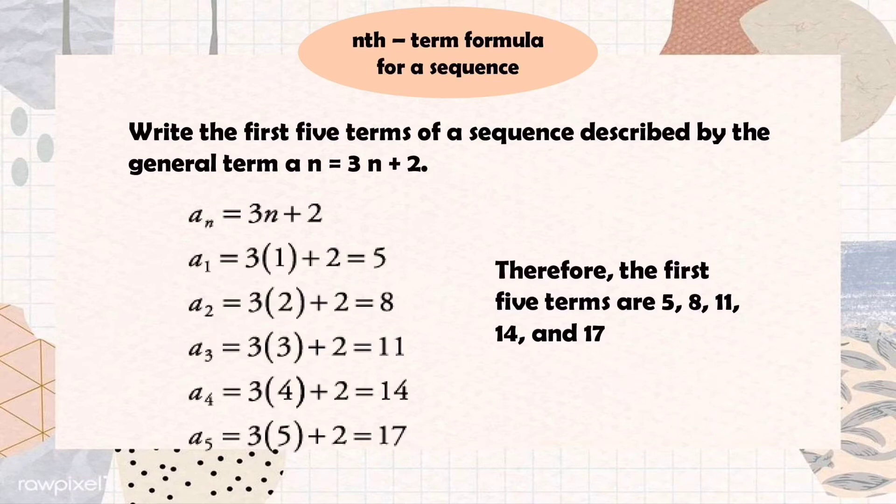In the previous example, we used difference table to predict the next term of a sequence. In some cases, we can use patterns to predict a formula called the nth-term formula that generates the terms of a sequence. For example, we have a sub n equals 3n plus 2. Given this rule, we're just going to substitute a sub 1 because we denote this as the first term. So a sub 1 equals 3 times 1 plus 2. So 3 times 1 equals 3 plus 2 equals 5, and that is our first term.